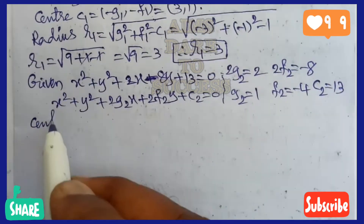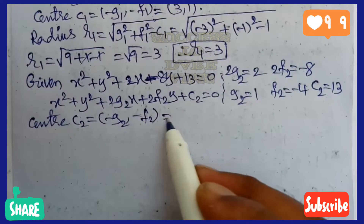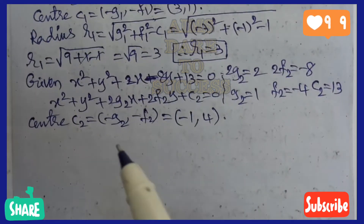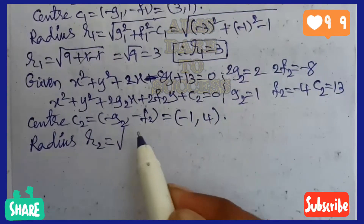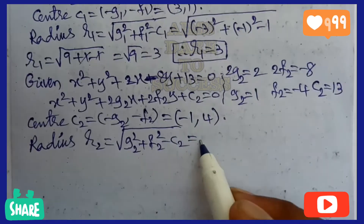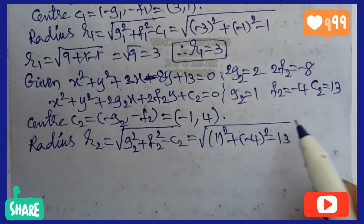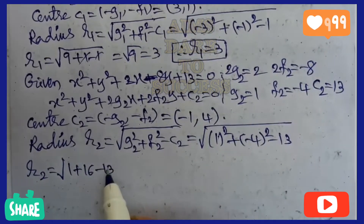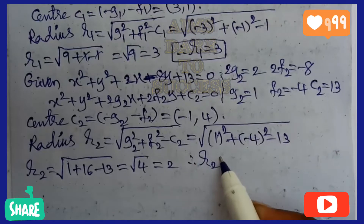Center₂ = (-g₂, -f₂) = (-1, 4). Next, radius r₂ = √(g₂² + f₂² - c₂) = √(1² + (-4)² - 13) = √(1 + 16 - 13) = √4 = 2. So r₂ = 2. From the second circle, radius and center are completed successfully.